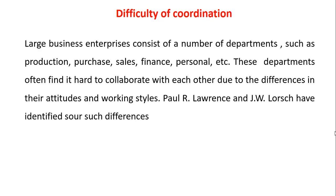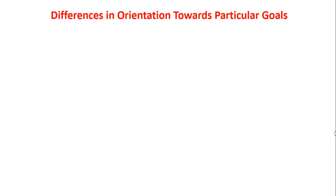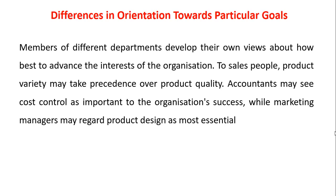Next we will move to the topic: difficulty of coordination. Large business enterprises consist of a number of departments such as production, purchase, sales, finance, personnel, etc. These departments often find it hard to collaborate with each other due to differences in their attitudes and working styles. Paul R. Lawrence and J.W. Lorsch have identified four such differences under difficulty of coordination. The first is differences in orientation towards particular goals — members of different departments develop their own views about how best to advance the interests of the organization. For sales people, product variety may take precedence over product quality; accountants may see cost control as most important; while marketing managers may regard product design as most essential.